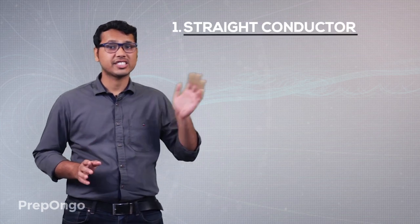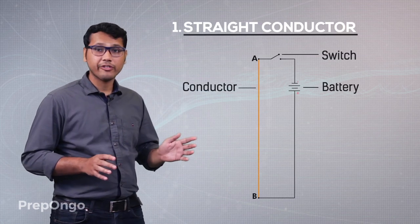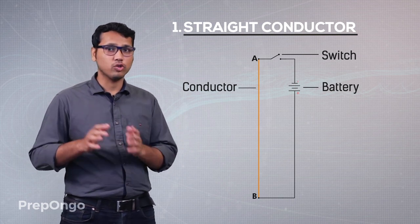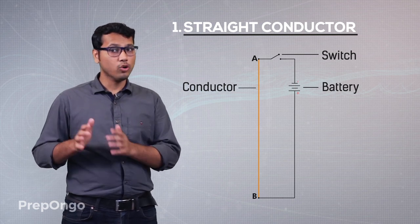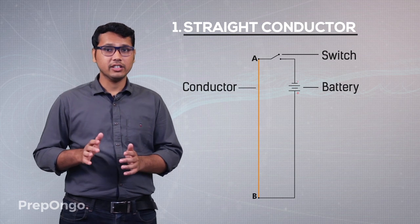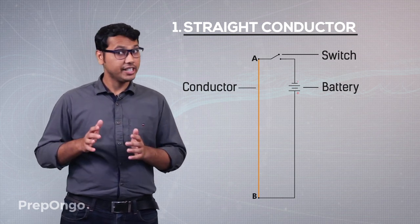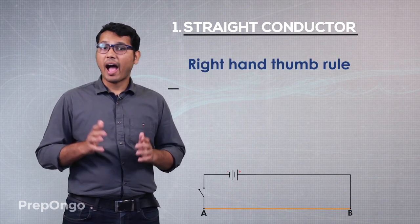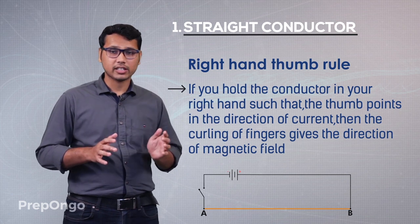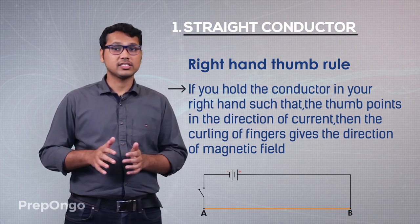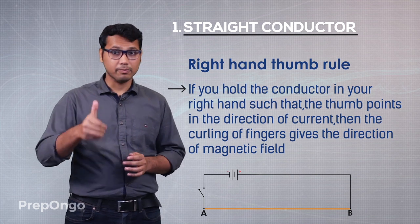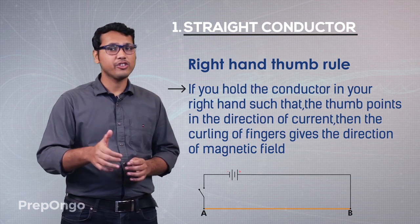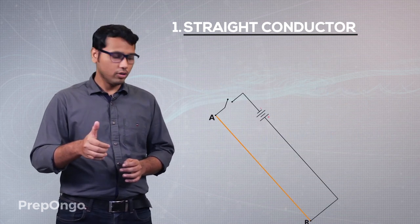The first conductor is a straight wire. We have to find the magnetic field around this wire, and we connect it to a battery so as to flow the current. We had studied about the right-hand thumb rule, which says that if we have to find the magnetic field at any point of the conductor, we have to hold the conductor in such a way that the thumb points in the direction of current.